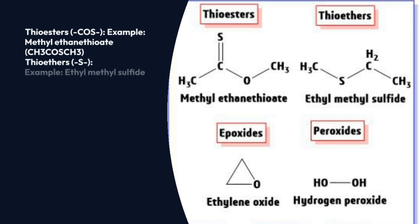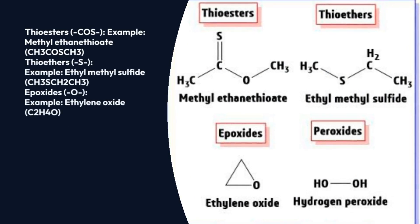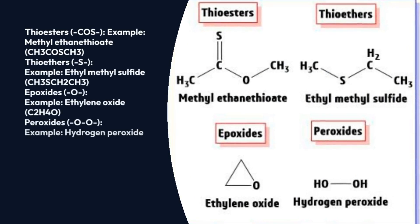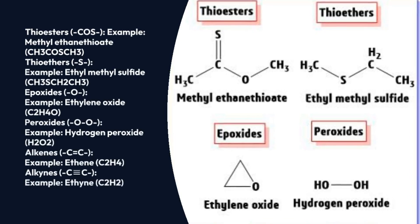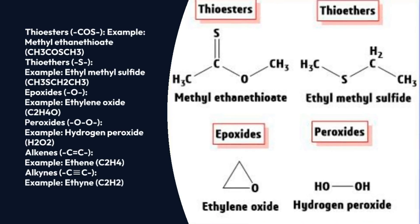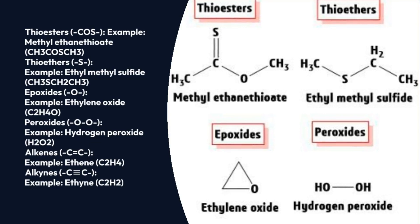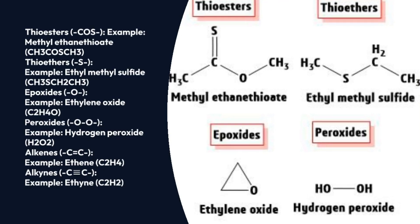The next category includes thioesters, epoxides, peroxides, alkenes, alkynes, and alkanes. For thioester, the example is dimethyl sulfide. For epoxide, the example is propylene oxide. For peroxide, the example is hydrogen peroxide. For alkene, the example is ethene; for alkyne, ethyne; and for alkane, ethane.